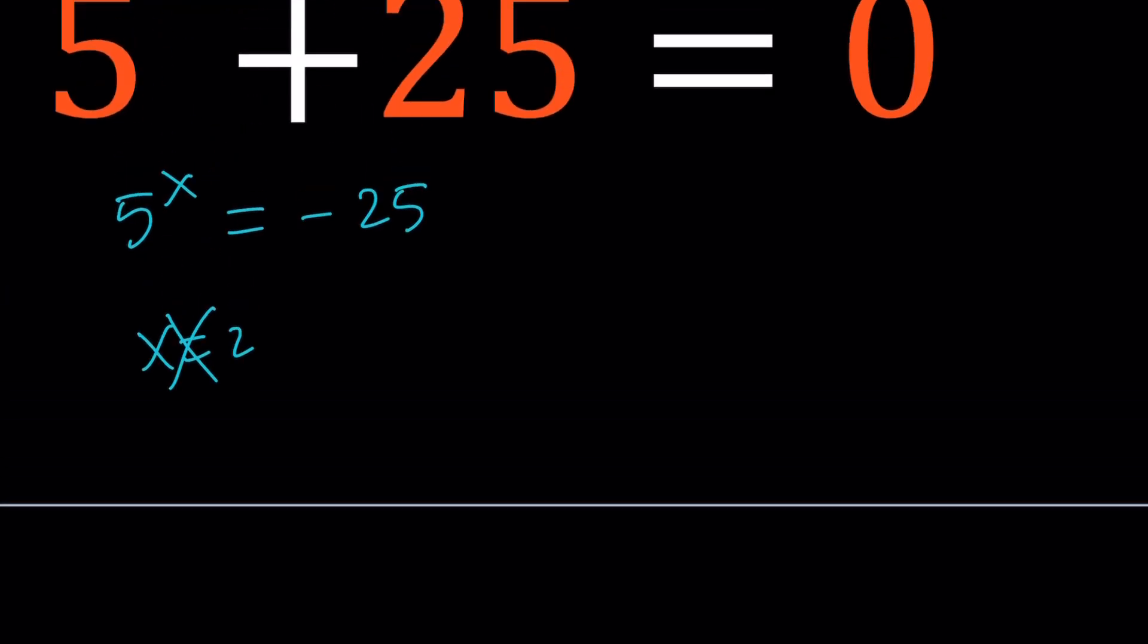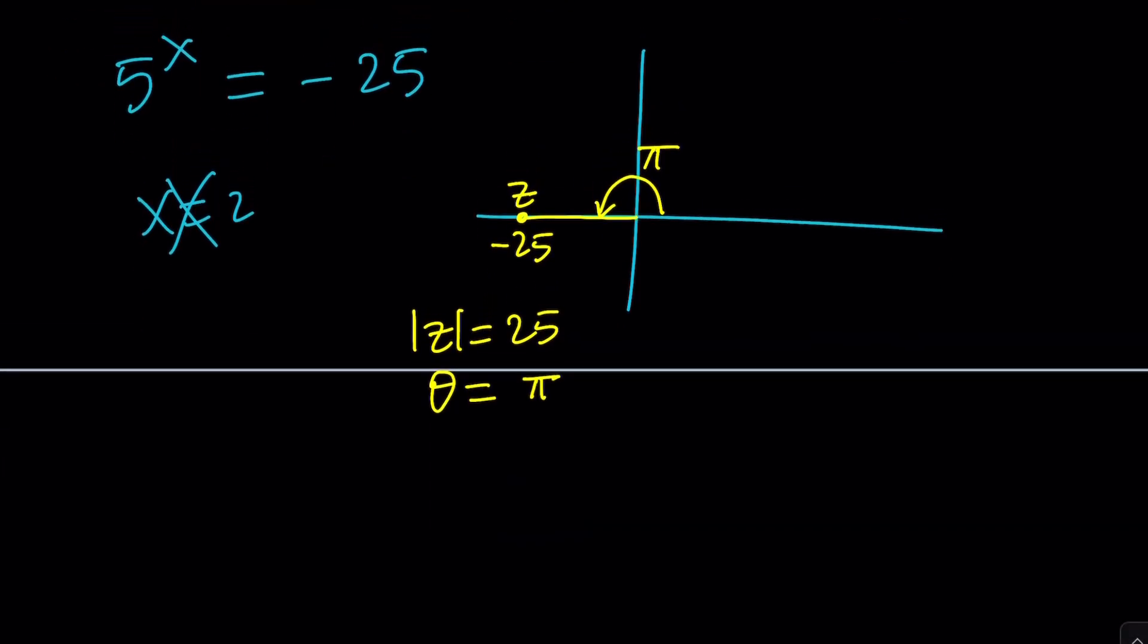Let's write negative 25 in polar form. To be able to write that we're going to do a couple things. First, notice that negative 25 is going to appear on the real axis on the negative side. And if you call it z, then its modulus, or absolute value, is going to be 25. And the theta, the angle that it makes, is going to be pi radians. So theta would be pi, or 180 degrees.